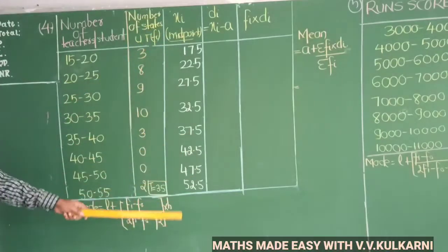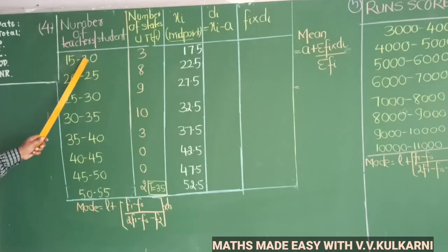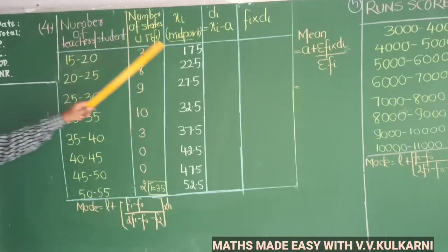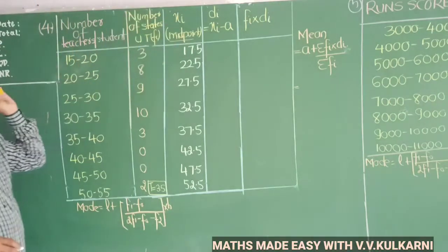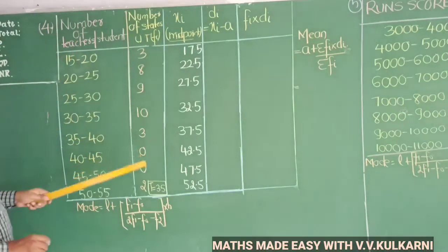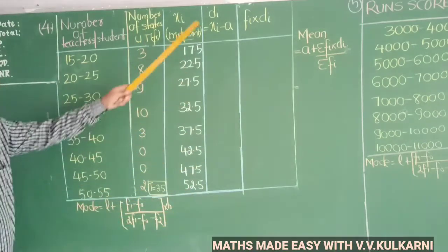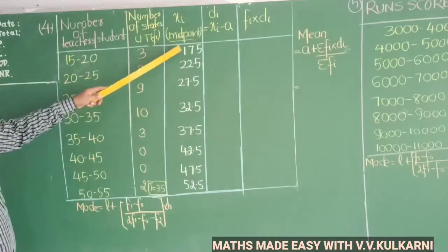So I have found the midpoints — for example, 15 plus 20 is 35, divided by 2 is 17.5. Now I need to find the deviation from the assumed mean. I will assume a mean value to work with.